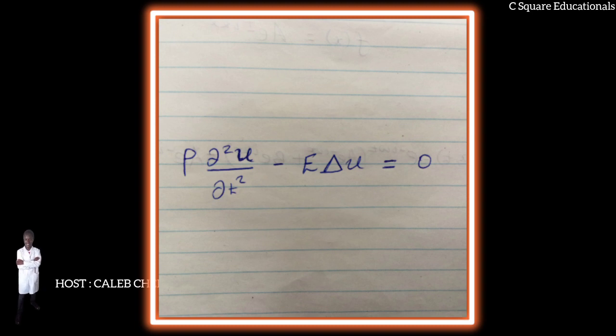ρ∂²u/∂t² - E∆u = 0. By matching the density ρ and elasticity modulus E,